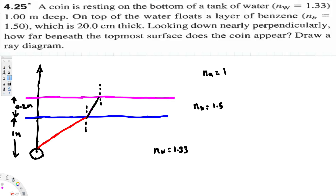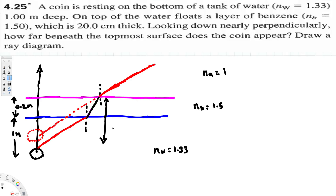The ray bends away from the normal. To find where the coin appears, we extend the refracted ray back. Where that extended line intersects gives us the coin's apparent position. The question is asking what is the distance from the top surface to the coin's apparent location — let's call this distance d, which is what we are trying to find.